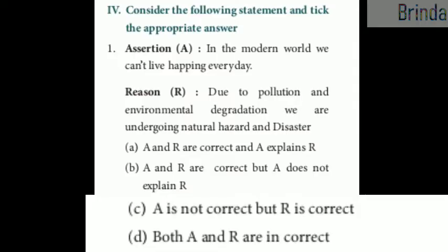Moving on to Roman No. 4 — Consider the following statements and tick the appropriate answer. Assertion: in the modern world we can't live happily every day. Reason: due to pollution and environmental degradation, we are undergoing natural hazards and disasters. Your options are: A — both assertion and reason are correct and assertion explains reason; B — both correct but assertion does not explain reason.